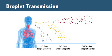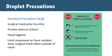Droplets are large and travel less than six feet from the source before settling out of the air. Because they are large, droplets don't stay in the air for very long.